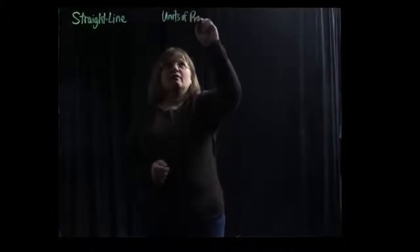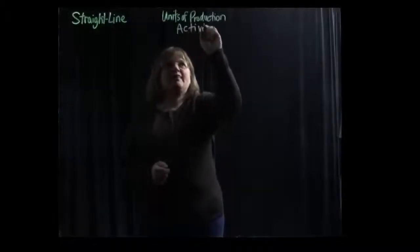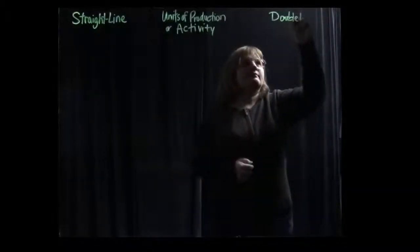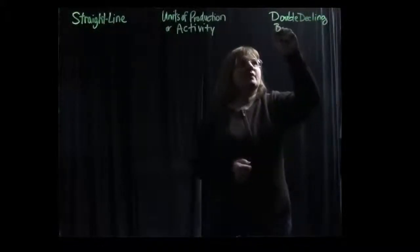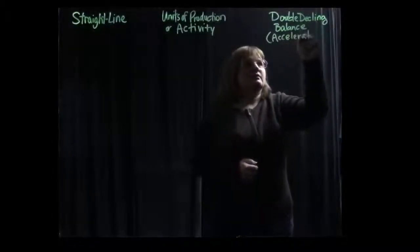Hi, I'm Dr. Cheryl Dunn and I'm here to talk about depreciation of fixed assets. We're going to talk about three different methods today. The first method is called the straight line method. The second method we're going to talk about is the units of production, which is also sometimes called the activity method. And the third method is the double declining balance method, or what is known as an accelerated depreciation method.